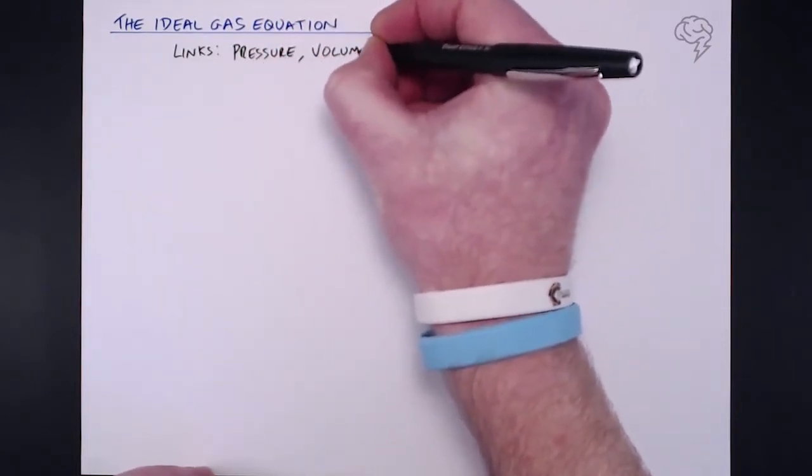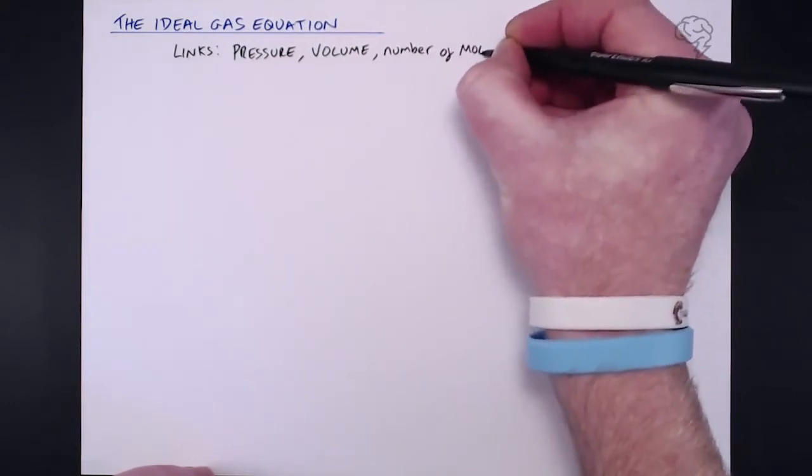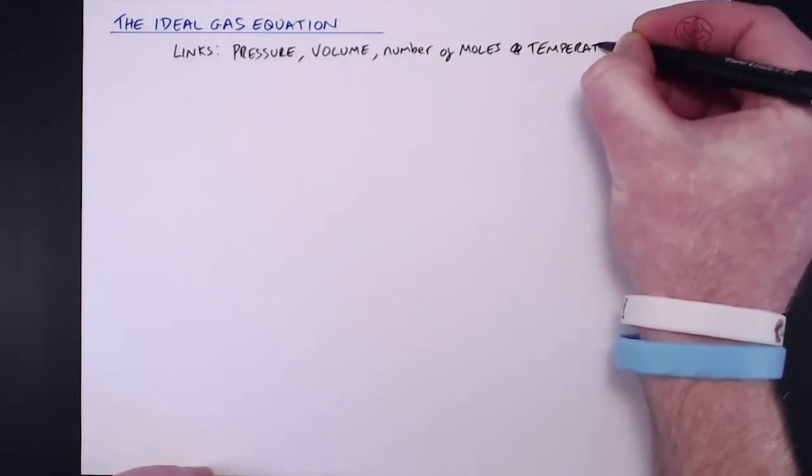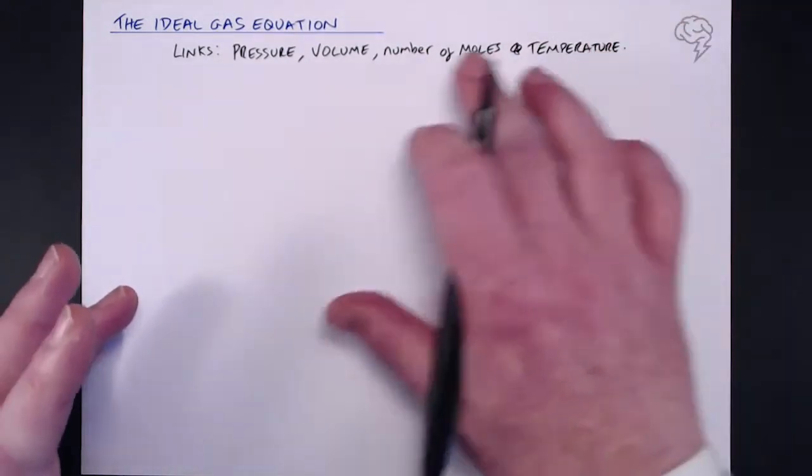So the ideal gas equation links pressure, volume, the number of moles of that gas, and of course the temperature that it's at. Because the volume can be affected by the pressure. So the greater the pressure, the more volume the gas is going to take up.